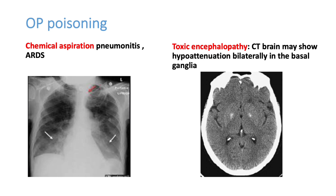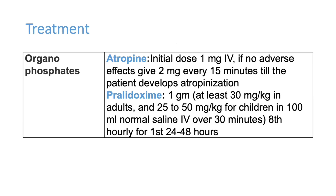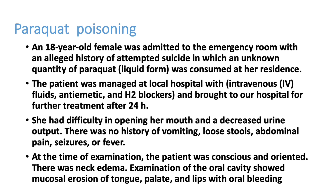The CT shows toxic encephalopathy features. There is hypoattenuation on both sides of the brain, especially in the basal ganglia. This patient can be treated with atropine infusion and pralidoxime. These are the standard care of treatment, and supportive therapy like mechanical ventilation may be required because the patient has progressed to ARDS.